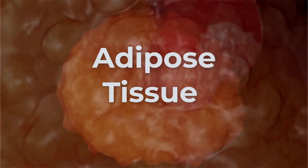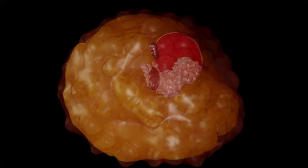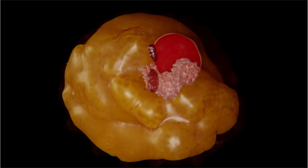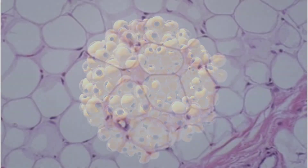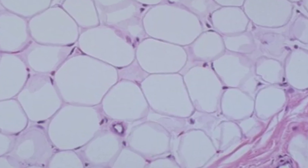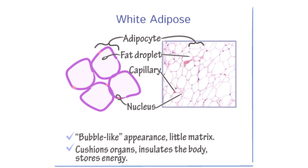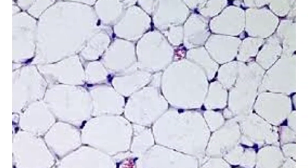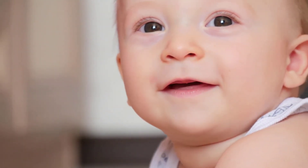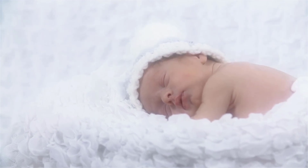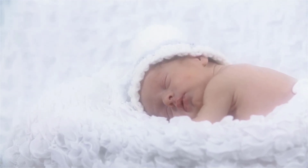Adipose tissue. The function of adipose tissue is to store energy and produce heat. Adipose tissue is considered a loose connective tissue type and belongs to the category connective tissue proper. There are actually two different types of fat tissues: white fat and brown fat. White fat stores energy in the form of a lipid droplet, while brown fat functions to generate body heat. Infants have a lot more brown fat than adults, which is one of the reasons that infants have a higher normal temperature than adults.